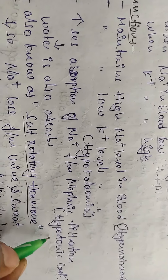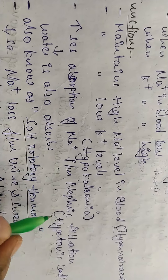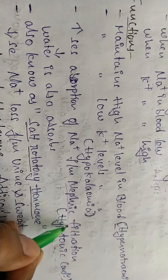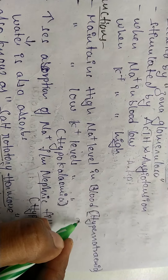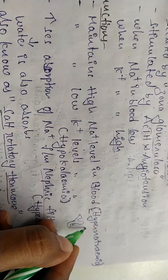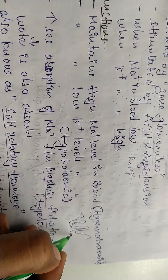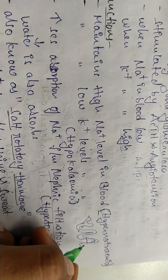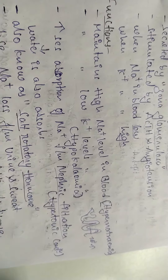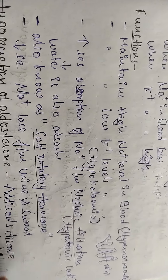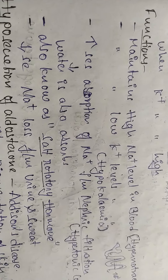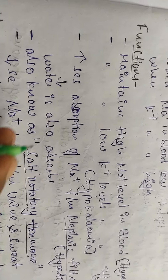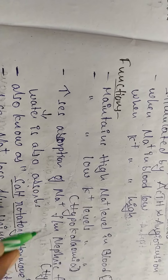Another function is increasing the absorption of sodium from nephron filtration — specifically tubular reabsorption. In the distal and proximal convoluted tubules of the nephron, absorption of sodium ions is increased. As sodium is reabsorbed, blood sodium concentration increases. Water is also absorbed during this reabsorption process.